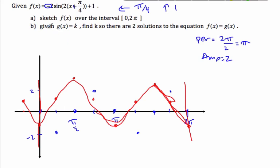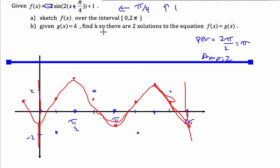Now part B is saying given g(x) = k, there are two solutions to this particular equation. Well, the fact that g(x) = k means that I have a horizontal line. This is a constant, so I'm dealing with the fact that I have a constant. This is y = some number.